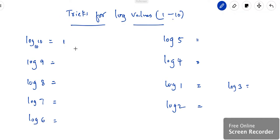Now after having written log 10 as 1, what you're going to do is just subtract 0.05 from 1, so we'll get 0.95.